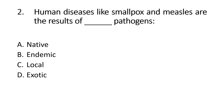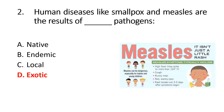Question 2: Human diseases like smallpox and measles are the results of which type of pathogens? The right option is Delta — Exotic. It means that smallpox and measles are also introduced as exotic invasive species pathogens.